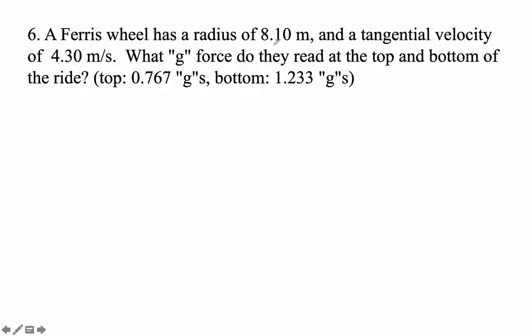A Ferris wheel has a radius of 8.10 meters and a tangential velocity of 4.30 meters per second. What g-force do you read at the top and the bottom of the ride? Okay, so step one is let's find the centripetal acceleration.